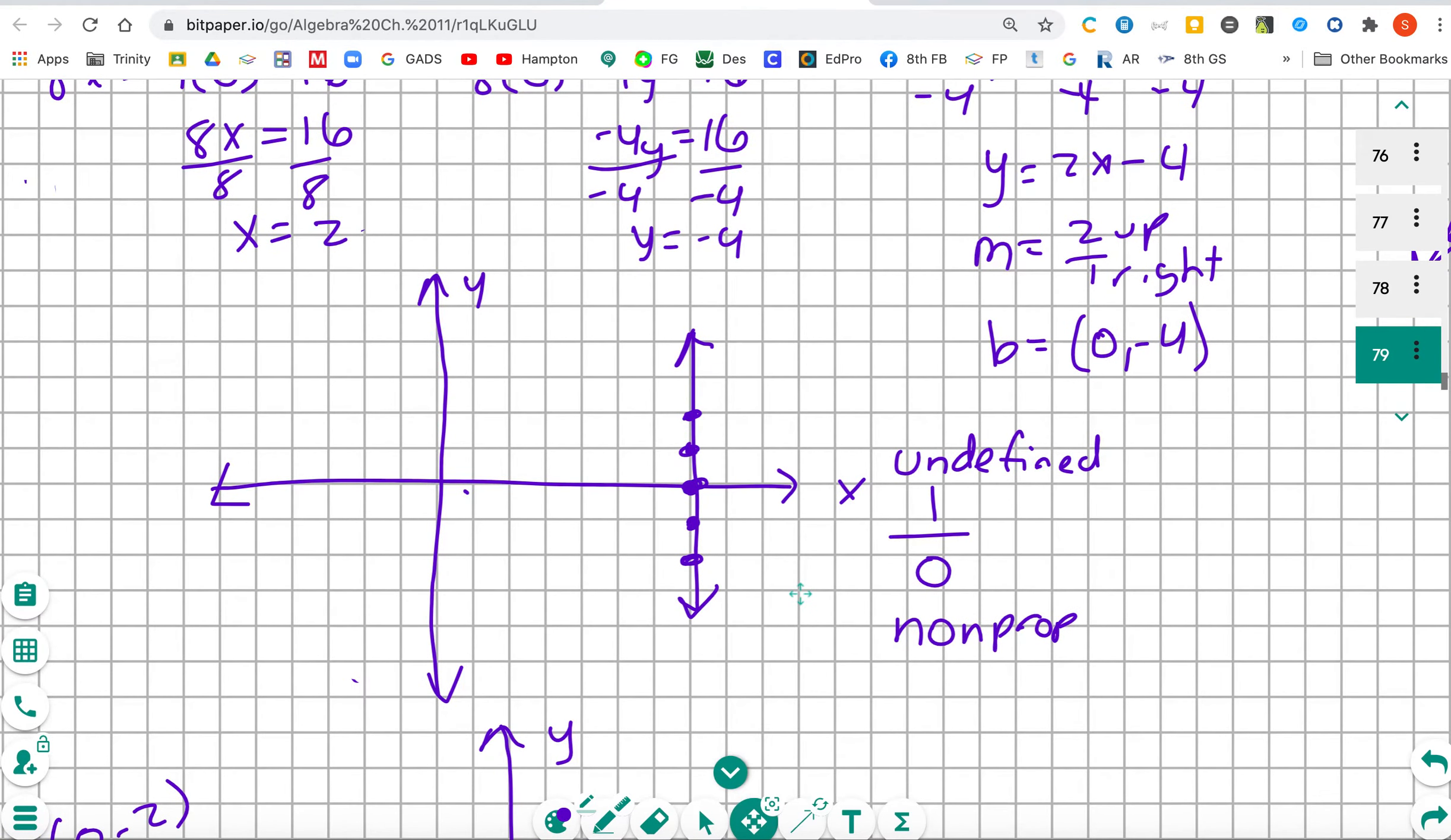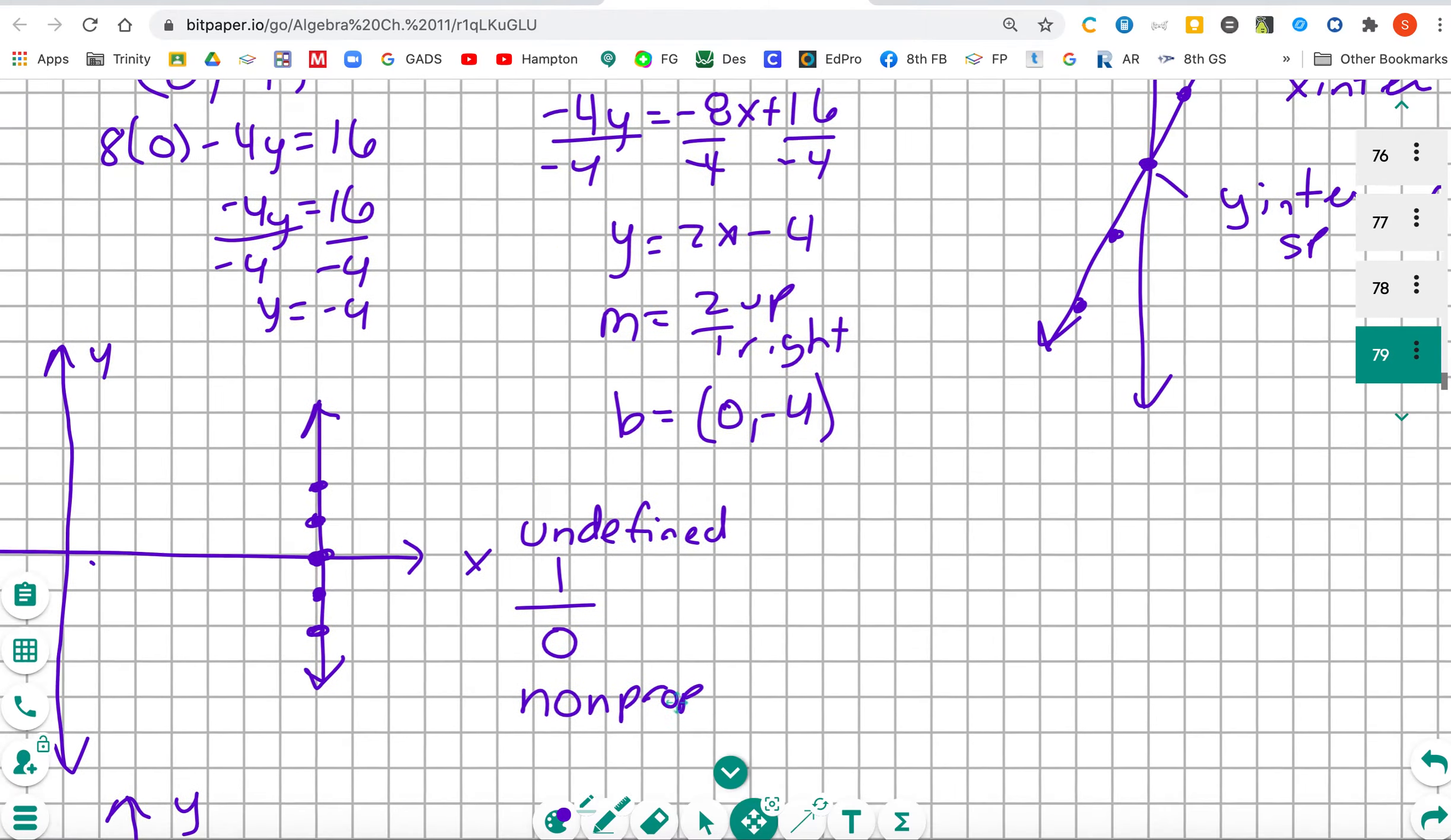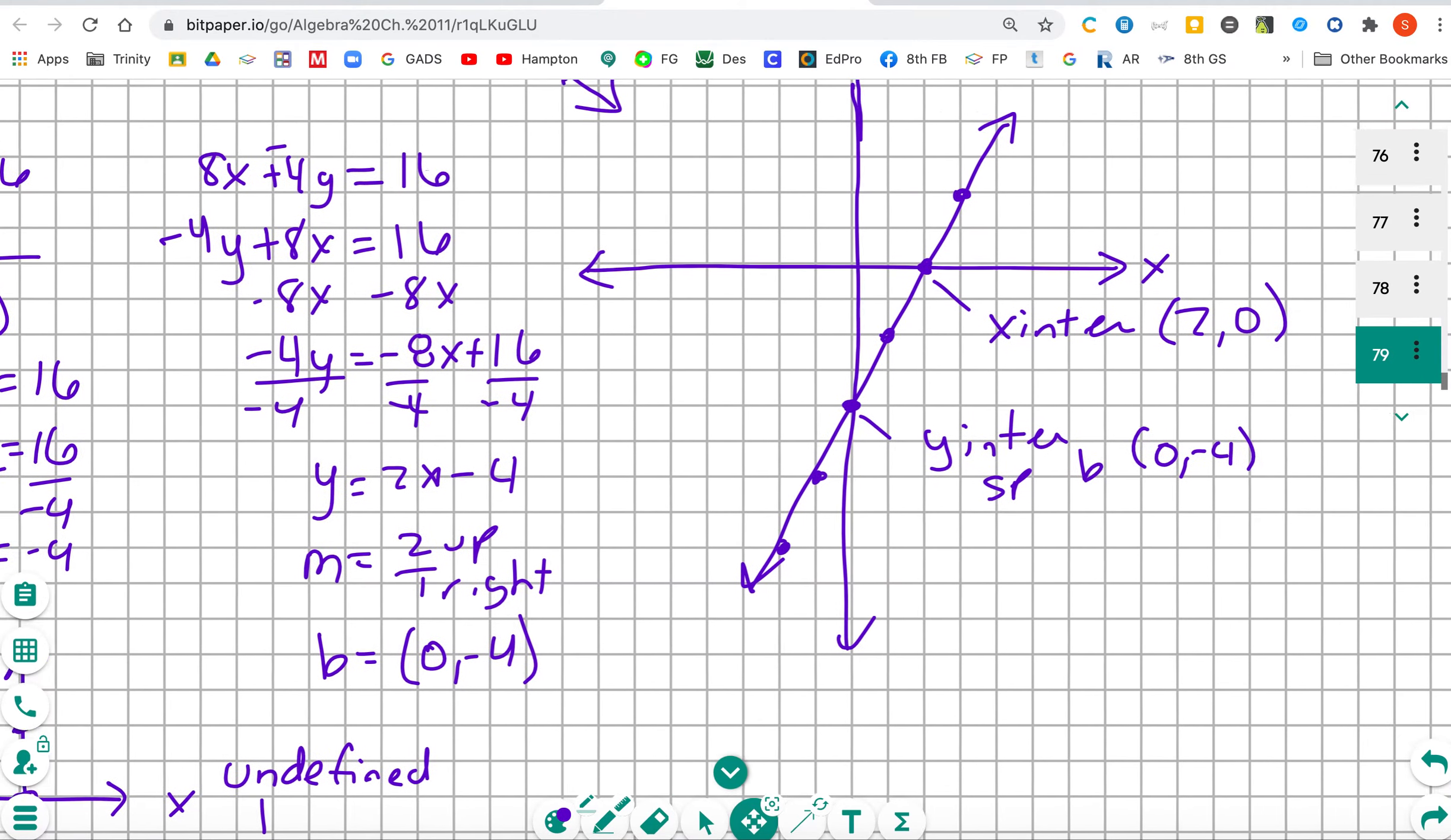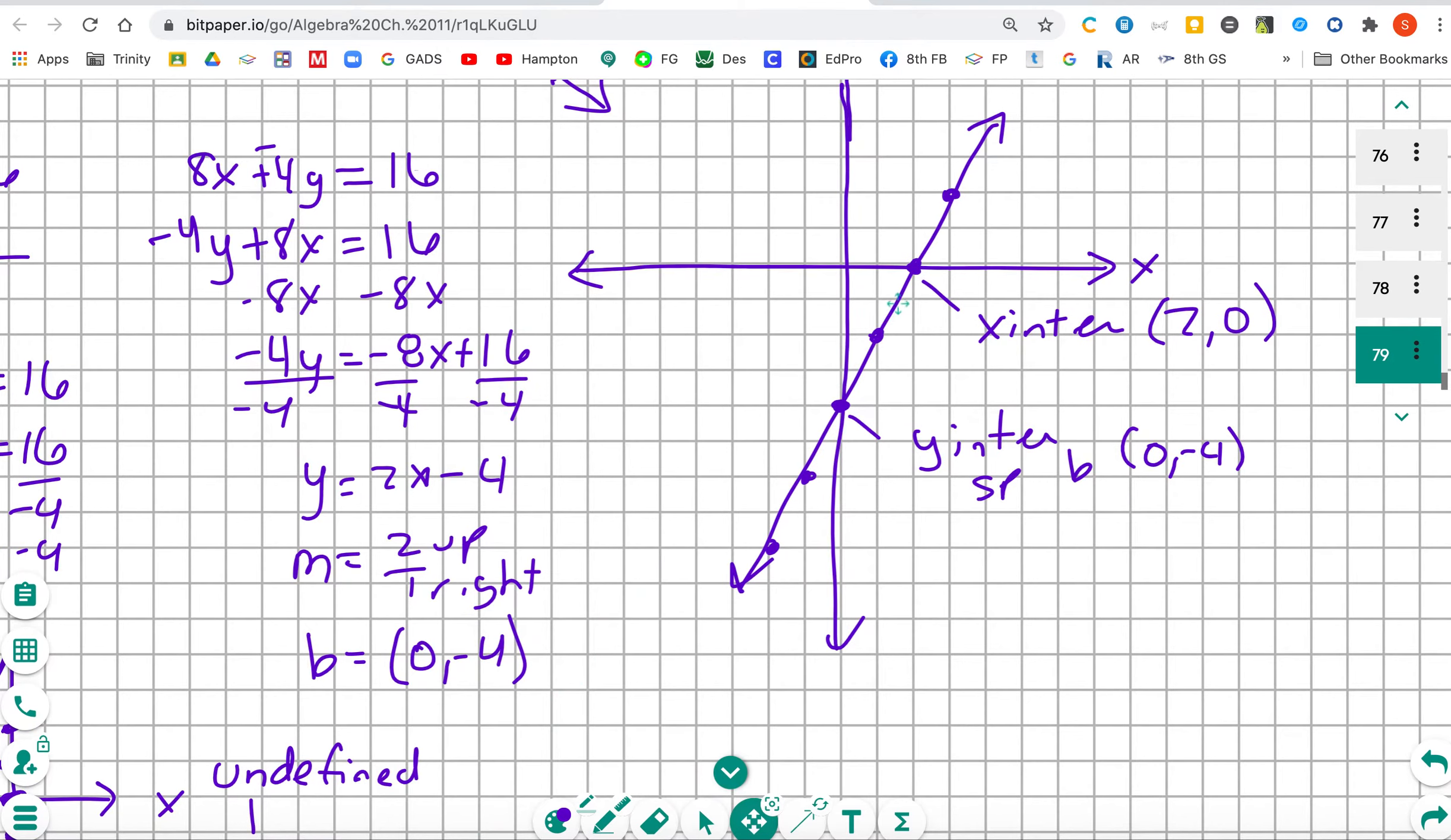If I'm going to identify the slope, it's going to be an undefined slope. If I were going to write it, it's 1 over 0, and it's non-proportional. Very quickly, just a reminder that the graph for number 12, positive, non-proportional.